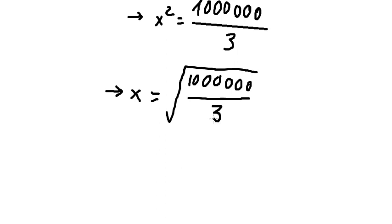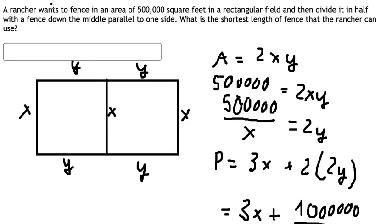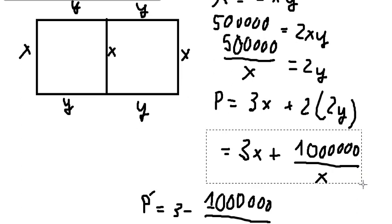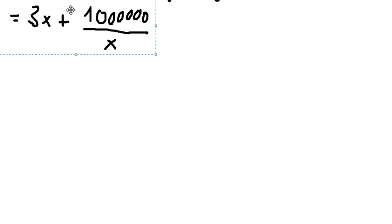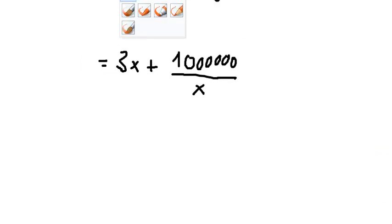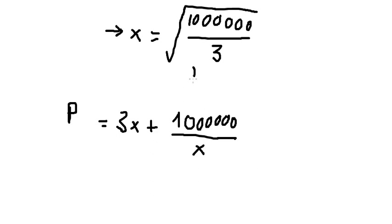After you got this number, we need to go back to the perimeter equation. So we put this number in here, and we have P approximately about 3,464.10, and that is the answer.